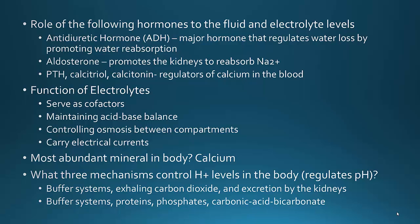What three mechanisms control the H+ levels in the body? H+ ions — this is what helps regulate pH. There are buffer systems, exhaling carbon dioxide, and also excretion by the kidneys.